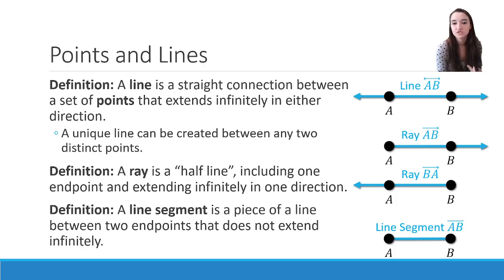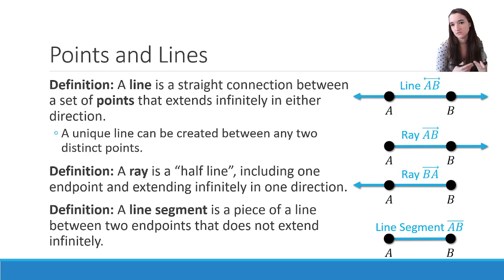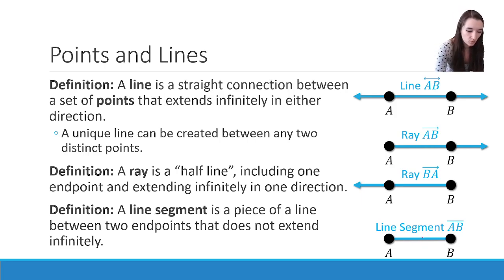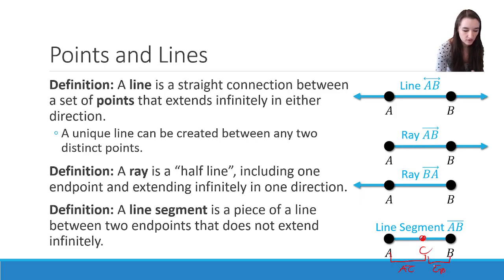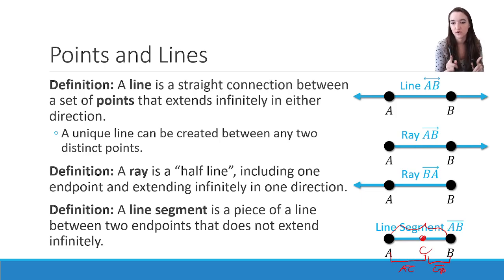Finally, we have a line segment, which is just a piece of a line between two endpoints that does not extend infinitely at all. We can name it in whichever order — line segment AB is the same thing as line segment BA. But if there was a point C in the middle, line segment AC would be just from A to C, and CB would be that part of it, but AB is the only way we can get the whole thing, because these are endpoints and we need to be specific about them.